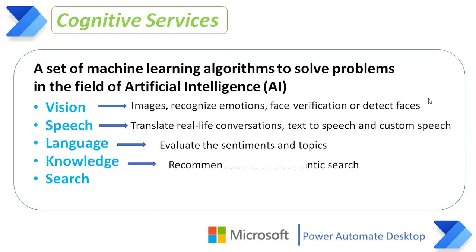Knowledge cognitive services collect and map complex data in order to solve particular problems such as recommendations and sentiment search. The Recommendation API learns from previous transactions to predict which items or products are most likely to be purchased together. The Q&A Maker is also a great feature which extracts all possible question-and-answer pairs from user-provided content such as FAQ URLs, documents, and more.